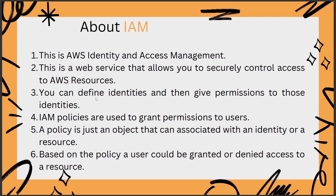Lastly, the AWS IAM service — this is the AWS Identity and Access Management. It is a web service that allows you to securely control access to AWS resources. You can define identities and give permissions to those identities. IAM policies are used to grant permissions to users; a policy is an object you associate with an identity or resource, and based on the policy, a user could be granted or denied access.